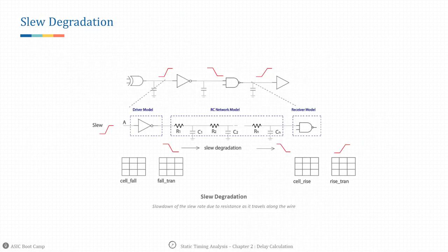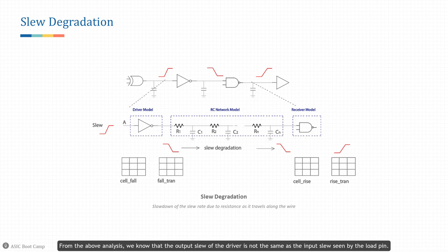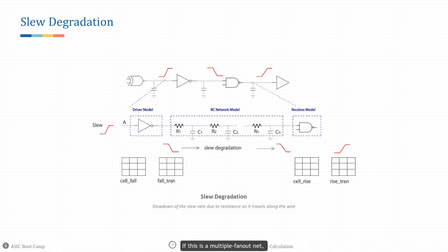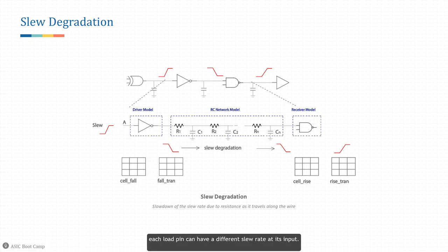Slew degradation: the output slew of the driver is not the same as the input slew seen by the load pin. The output slew of a driver depends on the input slew at this driver and the load capacitance seen from the driver output. The slew rate at the load input pin depends on both the output slew of the driver and the slew degradation along the path due to the resistive nature of the wire. If this is a multiple-fanout net — meaning one driver drives more than one load — each load pin can have a different slew rate at its input. This phenomenon is called slew degradation.